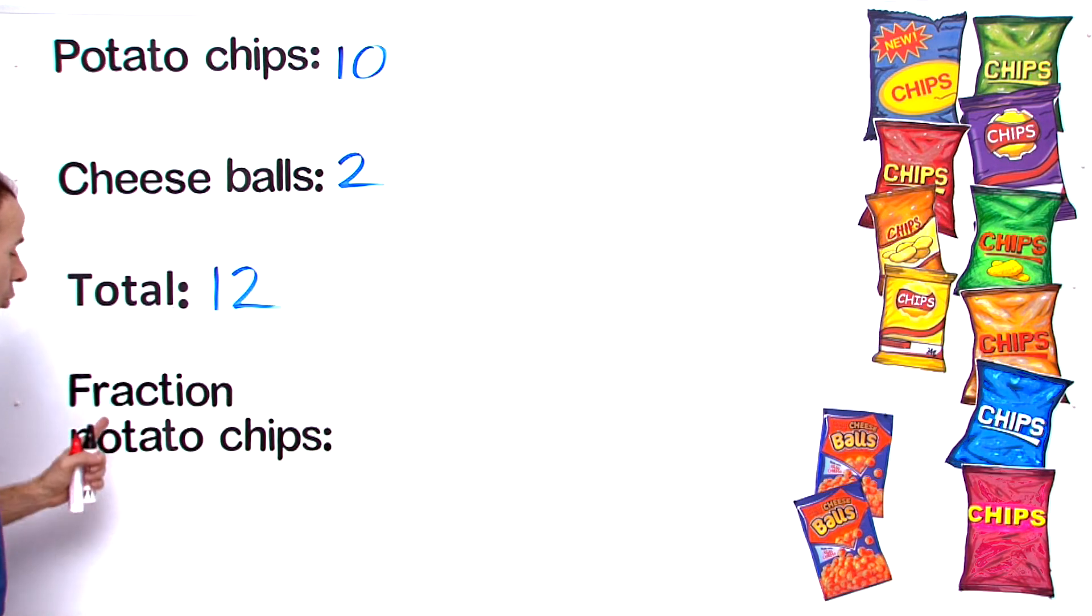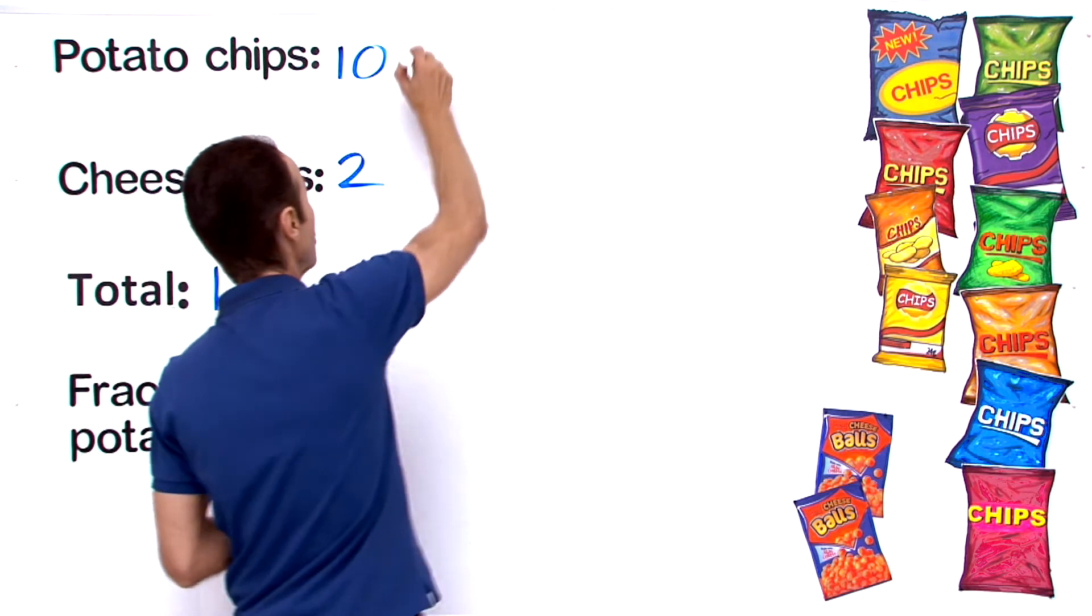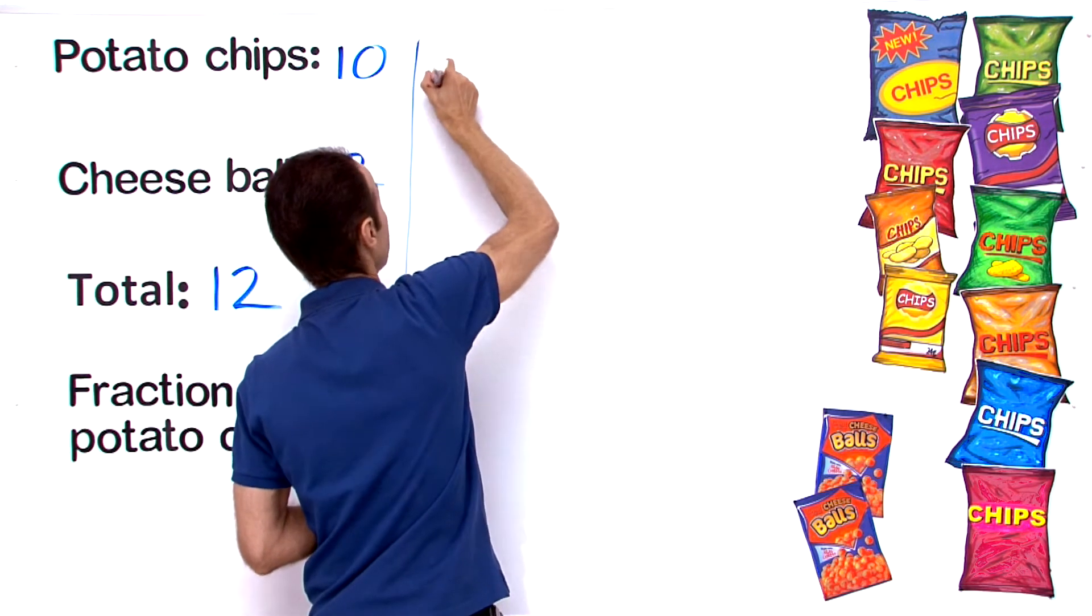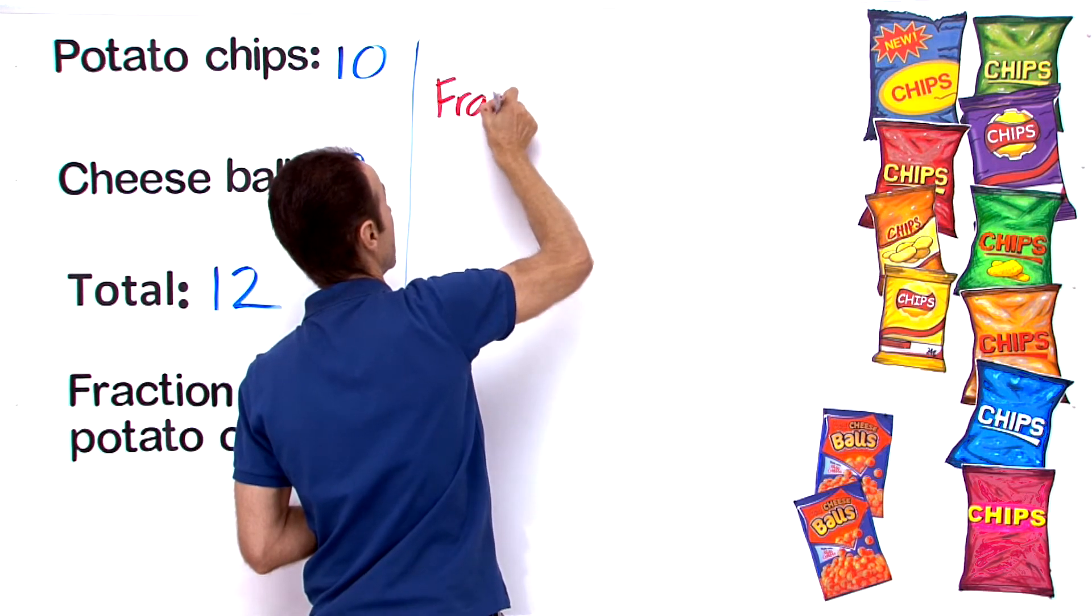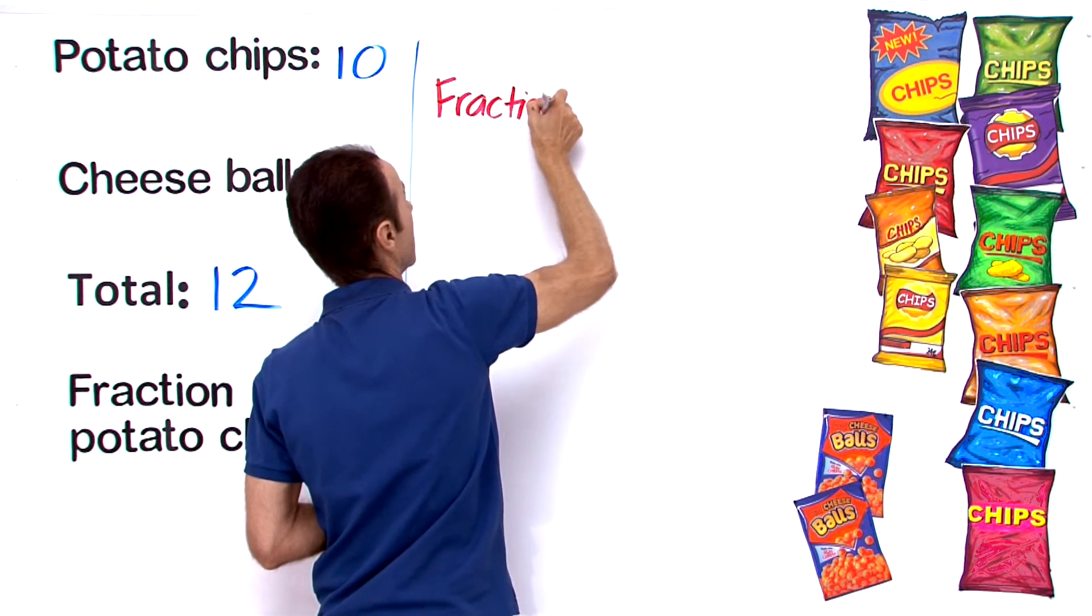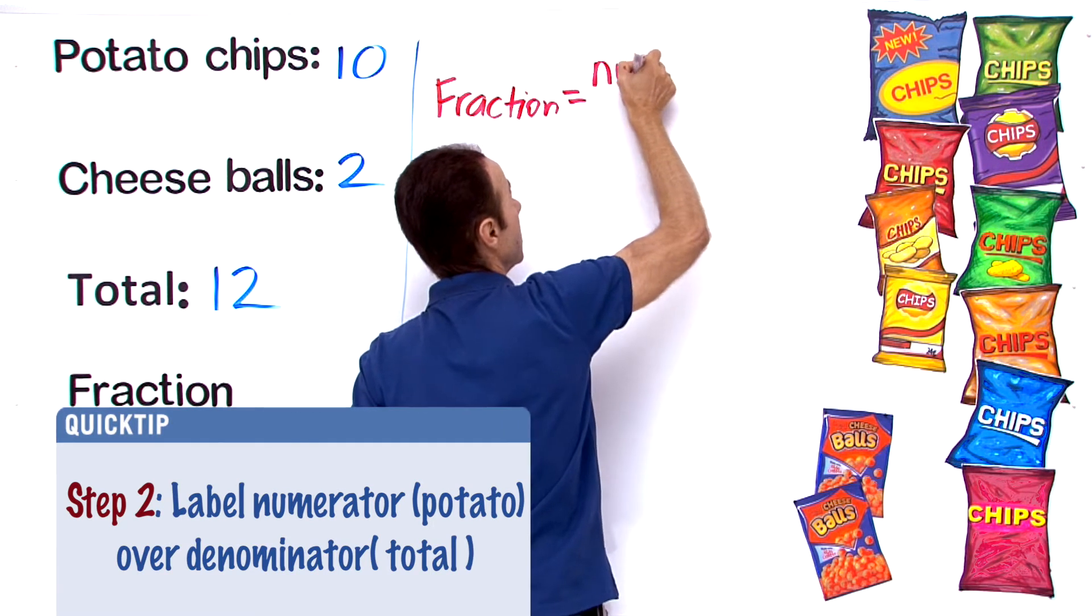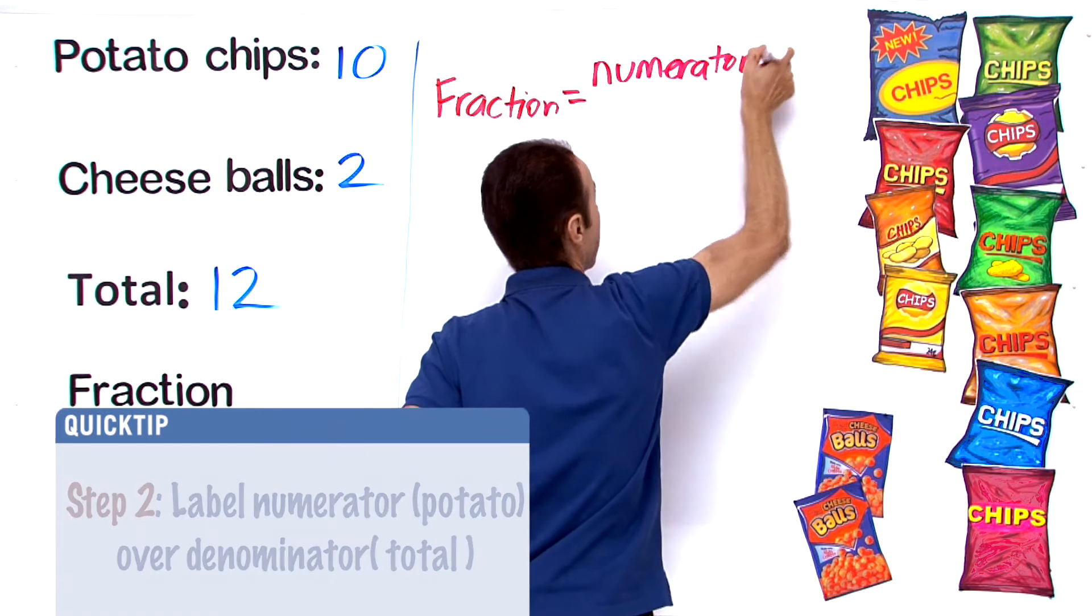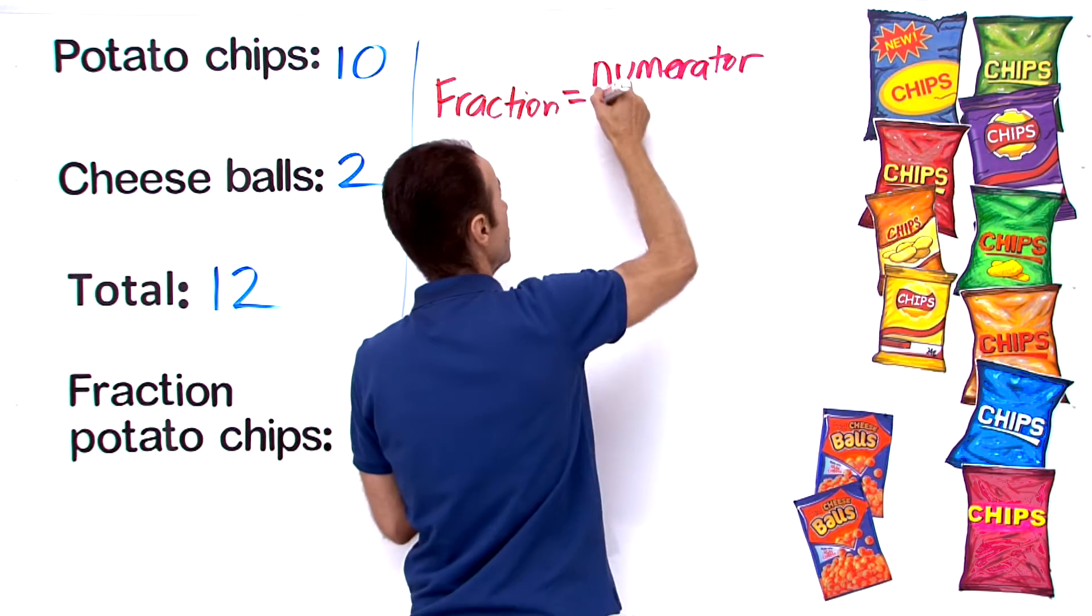Now the question asks what is the fraction of potato chips. In order for us to work out a fraction, we got to understand how the fraction works here. So fraction equals - on the top as you know already is a numerator, and down below we have the denominator.